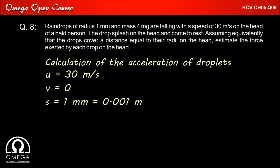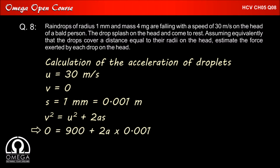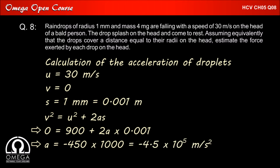Now we know that V² = u² + 2as, so putting in the values we get 0 = 900 + 2a × 0.001. Solving, we get acceleration equal to −450 × 1000, that is −4.5 × 10⁵ meters per second squared.